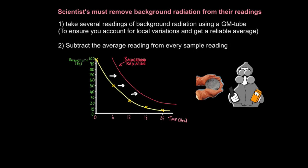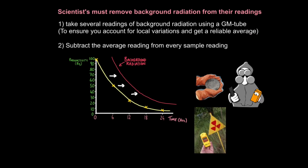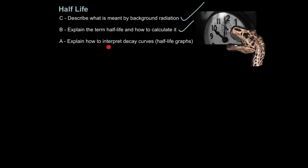So to get a true reading, you must subtract the background radiation reading from the reading of the sample, because the reading of the sample isn't just the sample. It's this plus background radiation. So you must minus background radiation to get just the sample's reading. How you do this is you take several readings of background radiation using a GM tube or GM counter. And this is to ensure you account for local variations and get a reliable average. So you would take readings at various points in your local area. When you have enough, you'd get an average reading. And then what you do is you subtract the average reading from every sample reading. So for every reading you took of uranium, you'd have to subtract the background radiation reading. Only then will you get the true uranium decay curve. And that is how you explain how to interpret decay curves or half-life graphs.